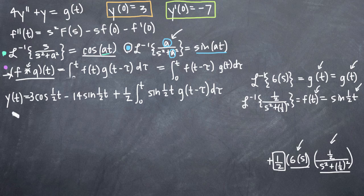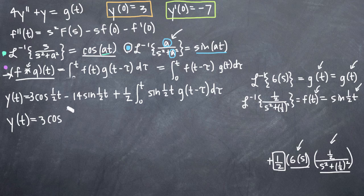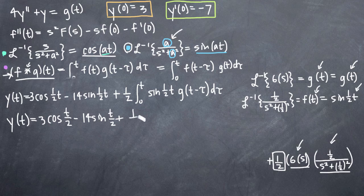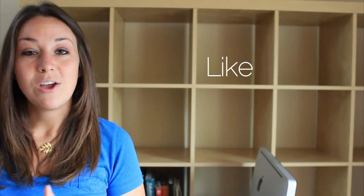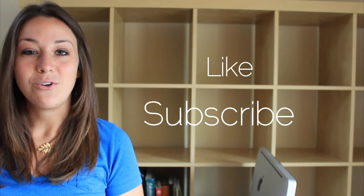So our final answer is: y(t) equals 3 cos(t/2) minus 14 sin(t/2) plus (1/2) times the integral from 0 to t of sin(t/2) times g(t minus τ) dτ. And that's it — that's our final answer. I hope you found this video helpful. If you did, like this video below and subscribe to be notified of future videos. See you next time.